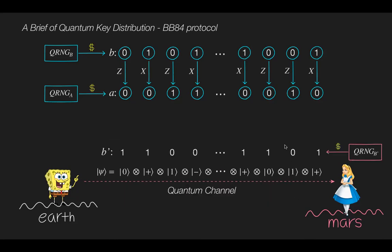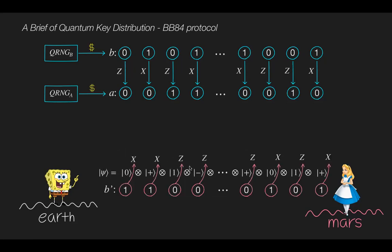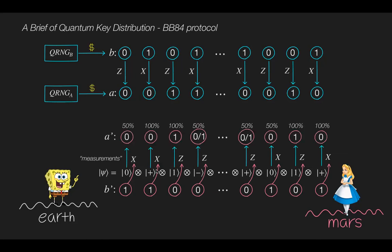Once Alice receives the signal from Bob, she also creates the random string b prime to decide which basis she uses for measurement of the quantum state. For example, if random bit in the string b prime is 1, Alice chooses the x basis for her measurement. If random bit is 0, Alice chooses the z basis for her measurement. Then Alice measures each qubit in a randomly selected basis. After her measurement, Alice will get a string a prime of measurement outcomes.